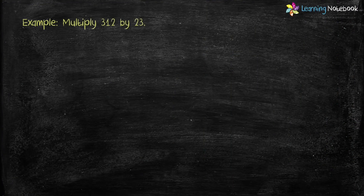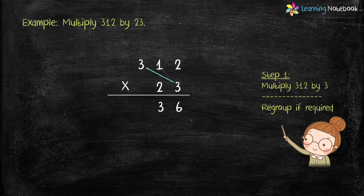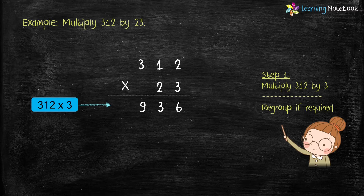Let's first write these numbers in columns as shown here. Now in step 1, we will multiply 312 by 3. 3 into 2 equals 6, 3 into 1 equals 3, 3 into 3 equals 9. So we have completed step 1 and the product of 312 by 3 is 936.